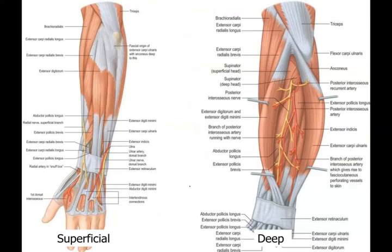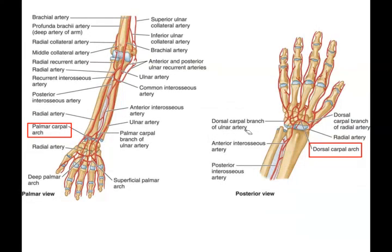This posterior view shows the relationship between the posterior interosseous nerve and the posterior interosseous artery in the forearm. Even at the wrist you see some degree of anastomosis through the palmar carpal arch and the dorsal carpal arch, through which many vessels anastomose to provide collateral supply - though we will not go into details of those.